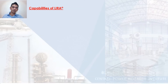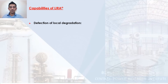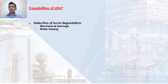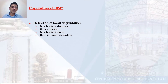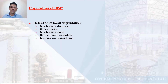What are the capabilities of the Lira system? With regards to finding localized defects, it can pick up mechanical damage, the presence of water trees in a cable, mechanical stress points, heat-induced degradation or oxidation, and defects in the cable terminations.